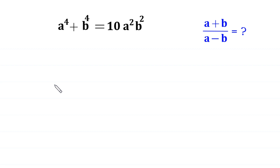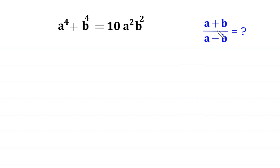Hello everyone, you are welcome. We will solve this very nice algebra equation: a to the power 4 plus b to the power 4 is equal to 10 a squared b squared. Our job is to find all possible values of a plus b over a minus b.